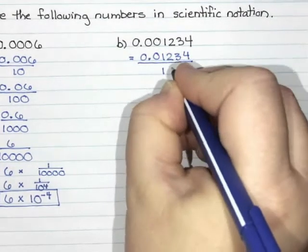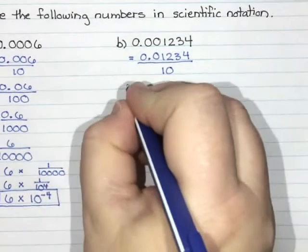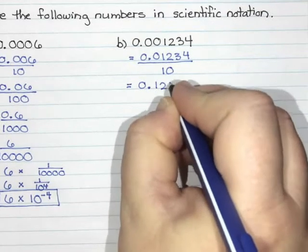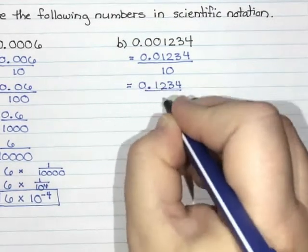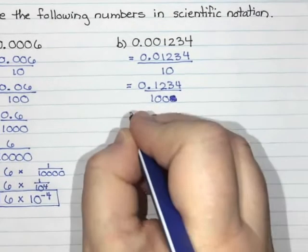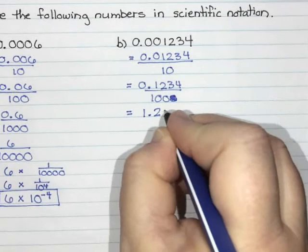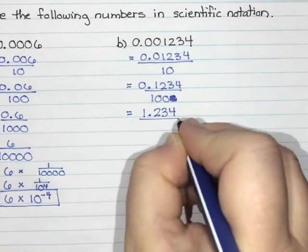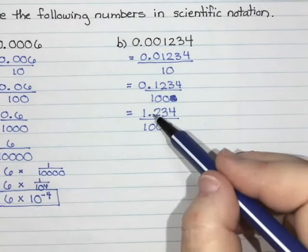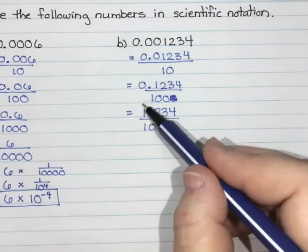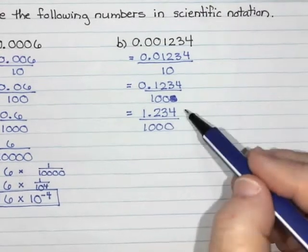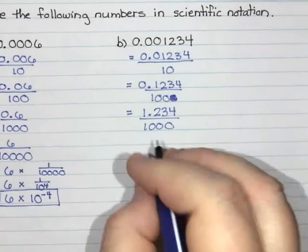If you don't believe me you can check it on your calculator. This would also be the same as 0.1234 divided by 100. Or 1.234 divided by 1000. Now I'm going to stop there because in scientific notation we want one number in front of the decimal point that's not a zero, so I'm happy with that.